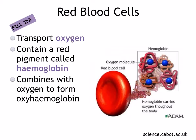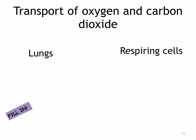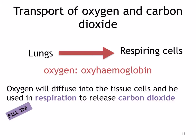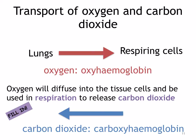So where does your blood get the oxygen from? As it flows past the lungs, it picks up the oxygen and then releases it at the respiring tissues, where the oxygen level is low. The red blood cells collect the oxygen at the lungs and transport it as oxyhemoglobin to the respiring cells. Oxygen then diffuses into the tissue cells and is used in respiration. The carbon dioxide produced is then transported from the respiring cells back to the lungs, combining with hemoglobin to form carboxyhemoglobin.